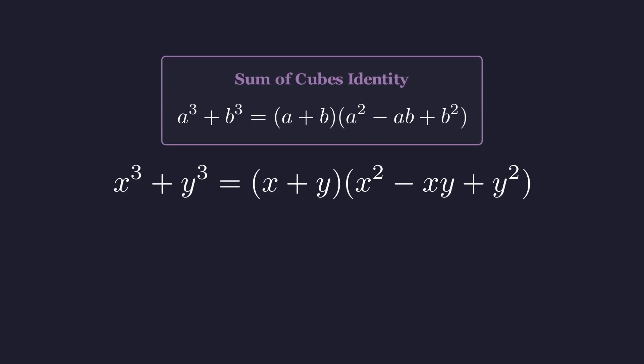Applying this to our problem, x cubed plus y cubed becomes x plus y times the quantity x squared minus xy plus y squared. And here's where things get interesting. We already know that x cubed plus y cubed is 7 and x plus y is 1. So we can substitute those values right in. 7 equals 1 times the quantity x squared minus xy plus y squared.